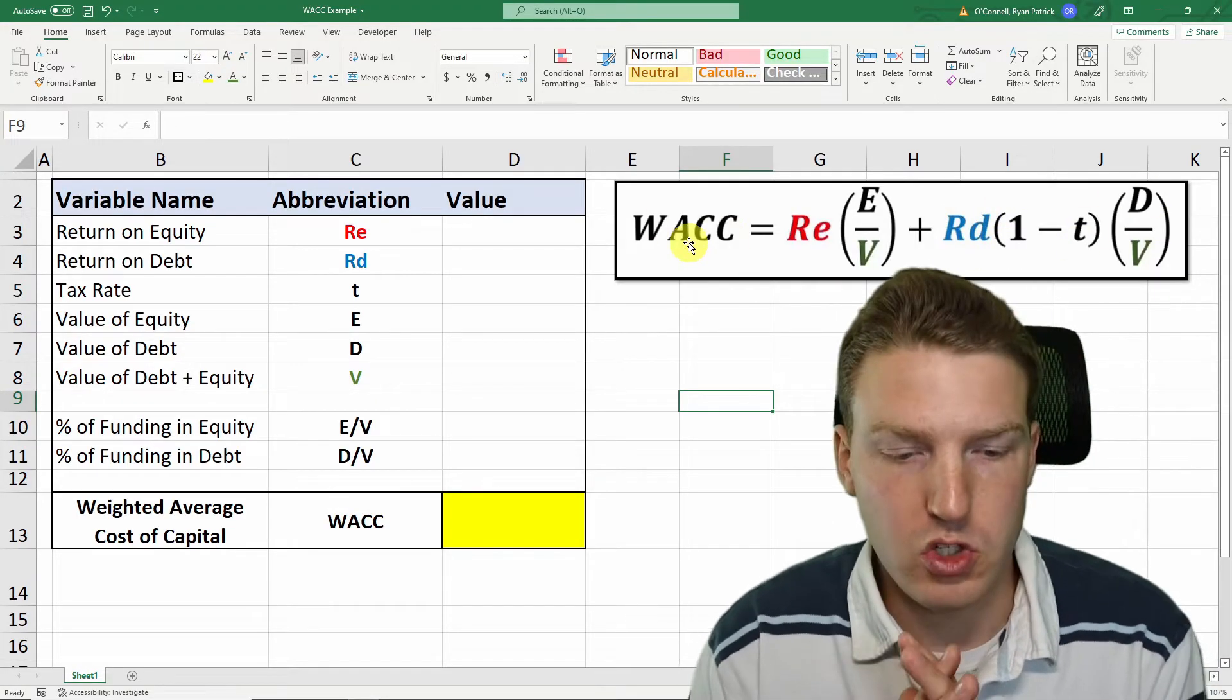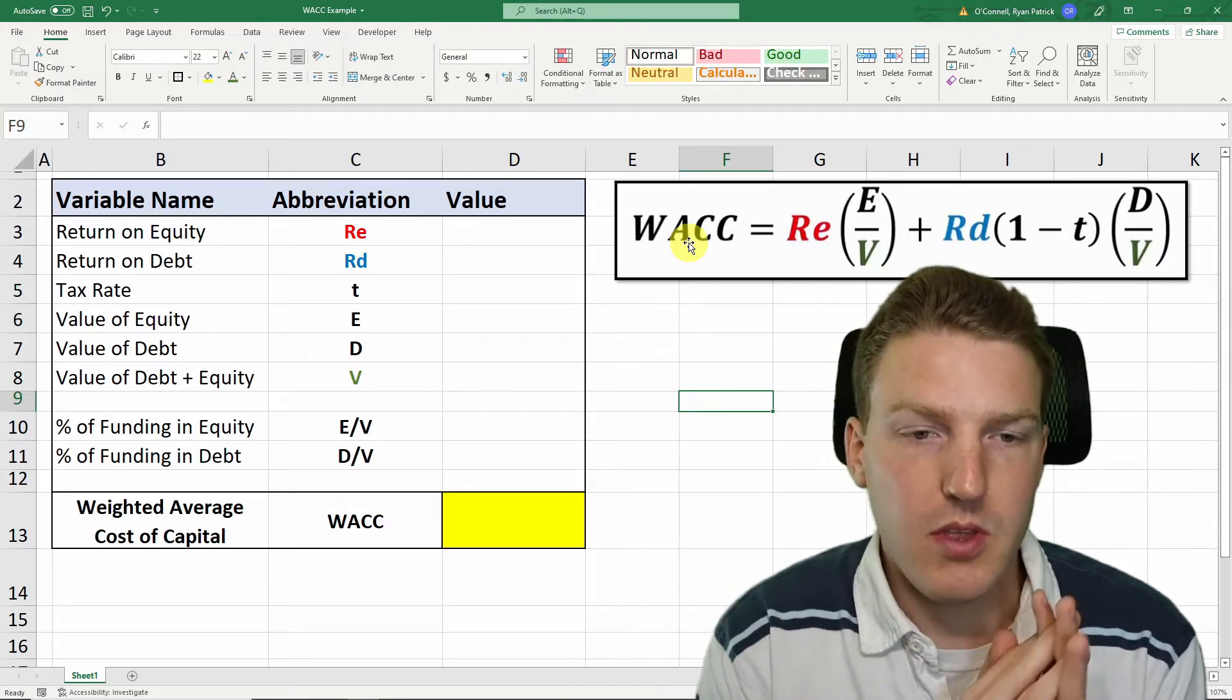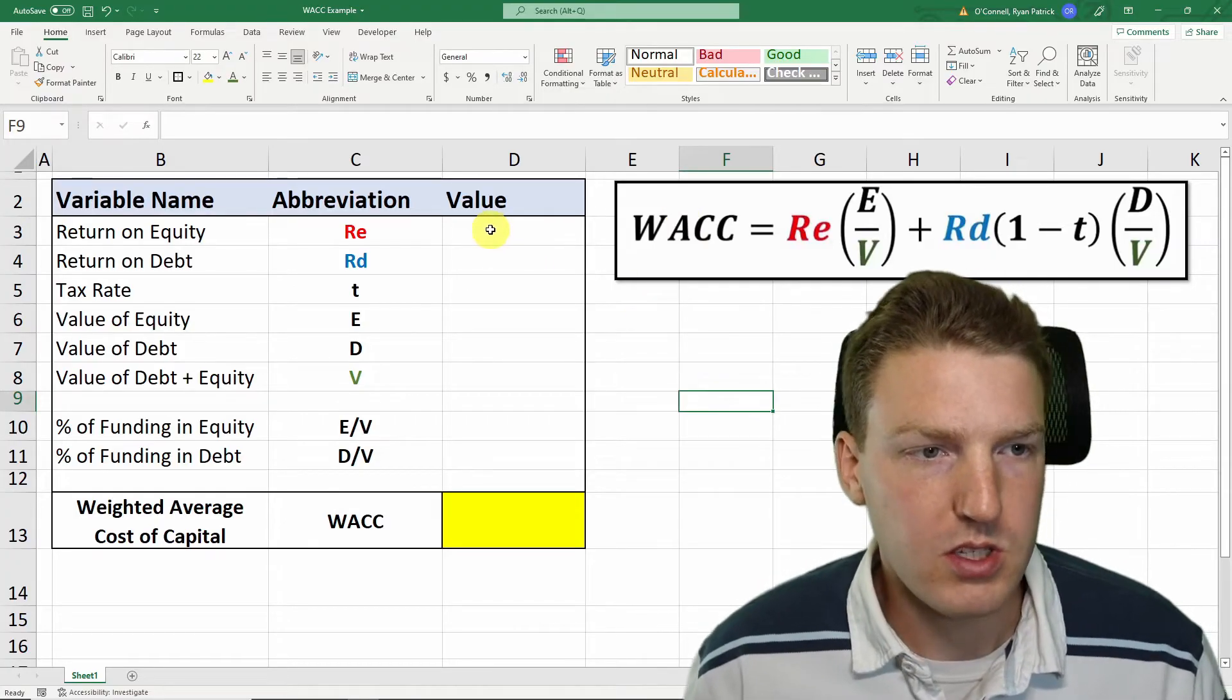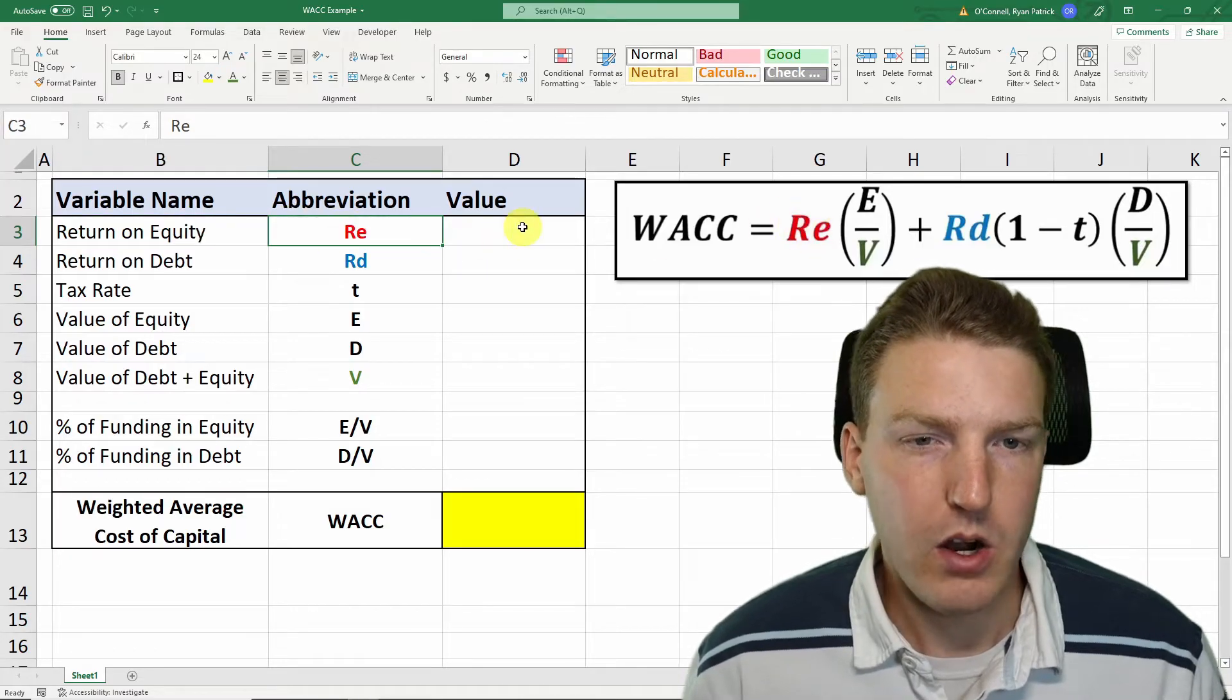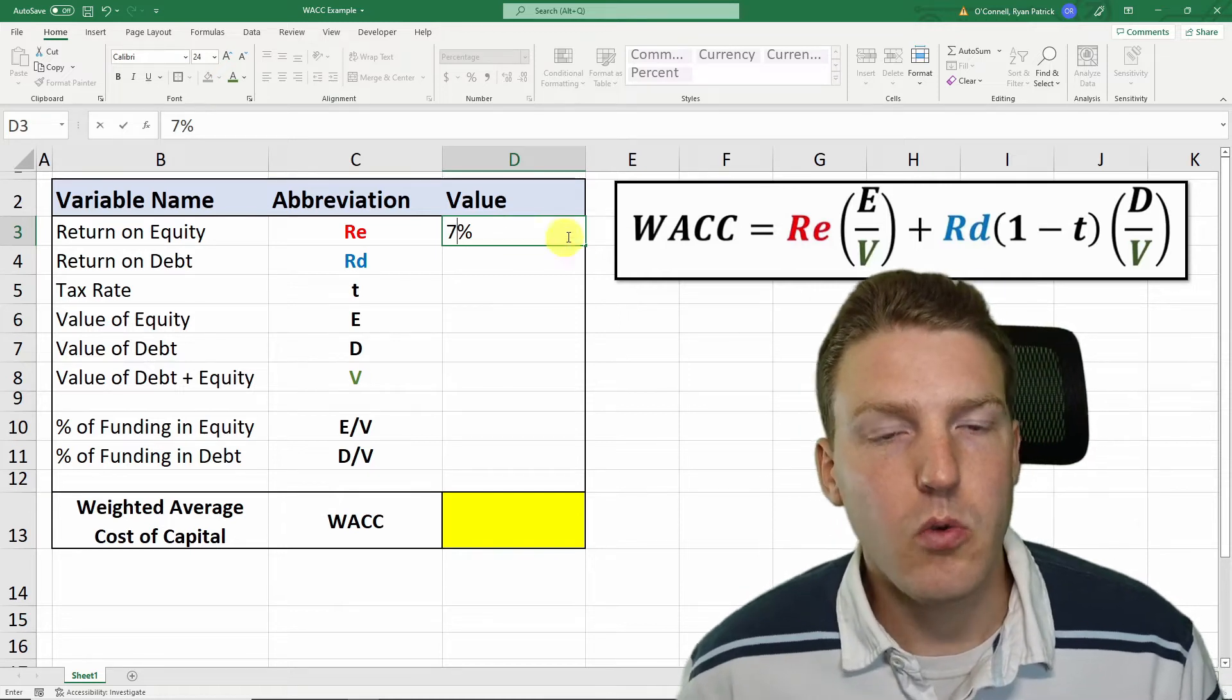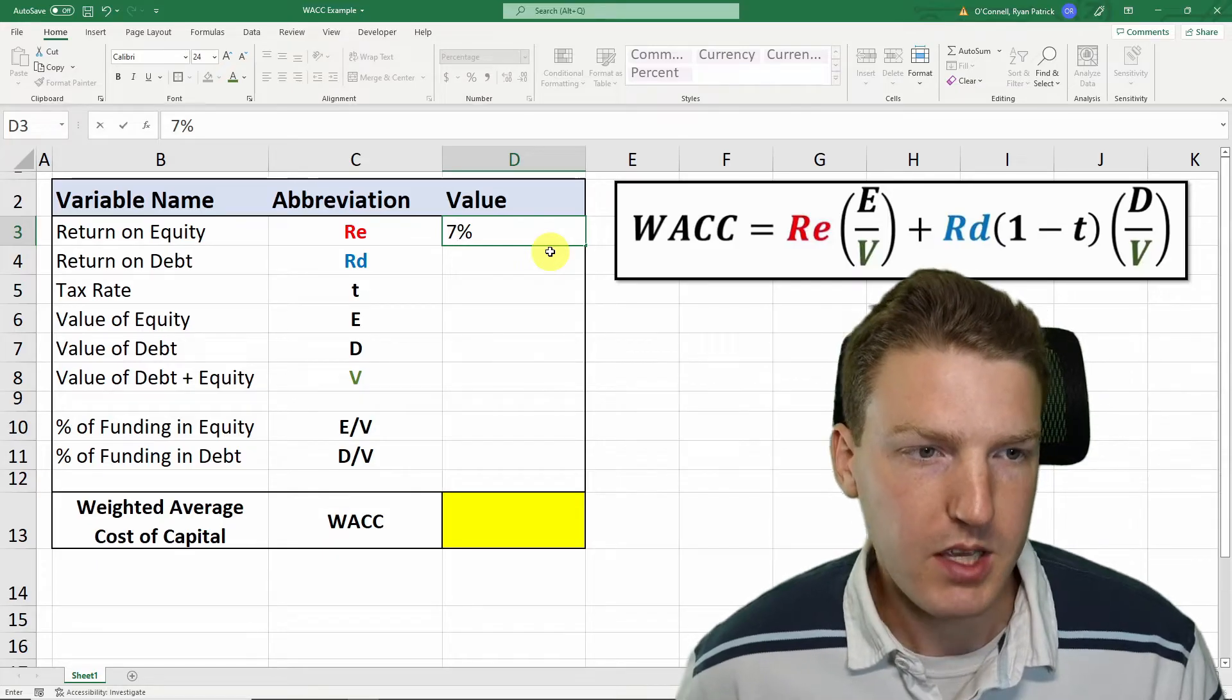Weighted average cost of capital is trying to find out the average cost of capital from the firm when we consider both equity and debt. Now let's go variable by variable. First, we need to look at return on equity, which is this highlighted red Re. We can make the assumption that if someone were to own money in our business, they would expect an annual return of 7% based on the risk they're taking.